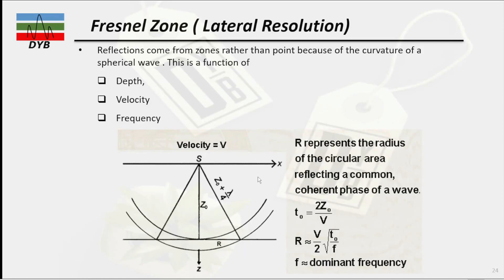Now we look at lateral resolution. In lateral resolution, reflections come from a zone rather than a point. In the subsurface, the reflection actually comes from a zone — this zone is called the Fresnel zone or horizontal zone. The wave passes from here and here, so you have reflections from multiple points. This also depends on the depth, velocity, and frequency. Mathematically, T0 equals 2 times depth divided by velocity, which is approximately equal to V over 2 times the square root of T0 over F, where F is your dominant frequency.